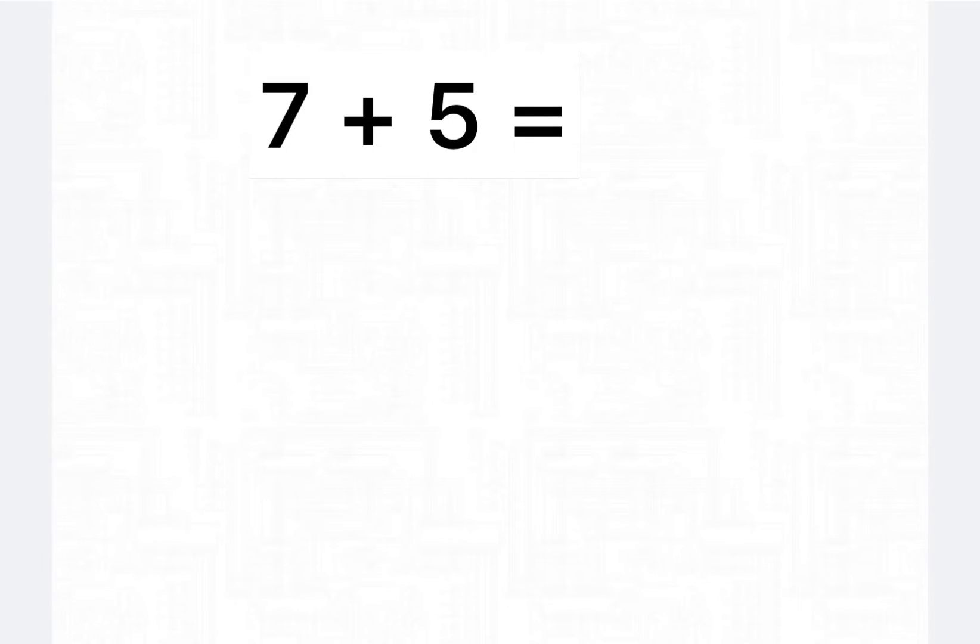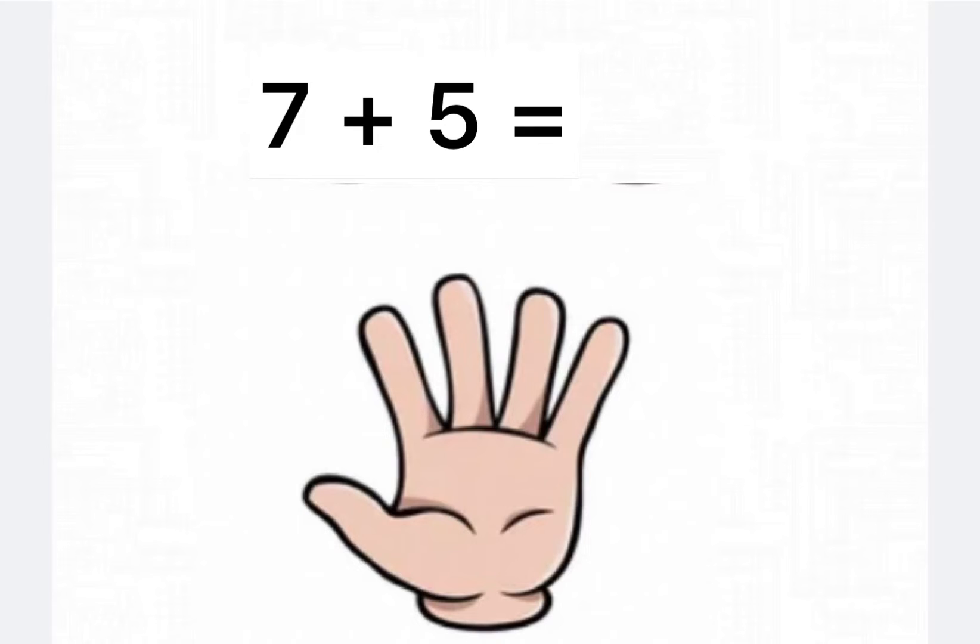The first question is 7 plus 5. Which number is the bigger number? 7. So that means we have to put 5 on our hands. So now we're going to count on from 7. 8, 9, 10, 11, 12. 7 plus 5 equals 12.